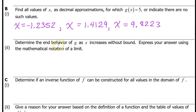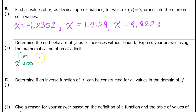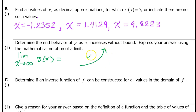B part 2: determine the end behavior of g as x increases without bound, and express your answer using the mathematical notation of a limit. As x increases without bound means the limit as x approaches positive infinity. Make sure you include g of x in your notation: the limit as x approaches positive infinity of g of x equals... Look at the right-hand side of the graph — is the function increasing without bound (put infinity), decreasing without bound (put negative infinity), or approaching an asymptote (put a number like 3)?